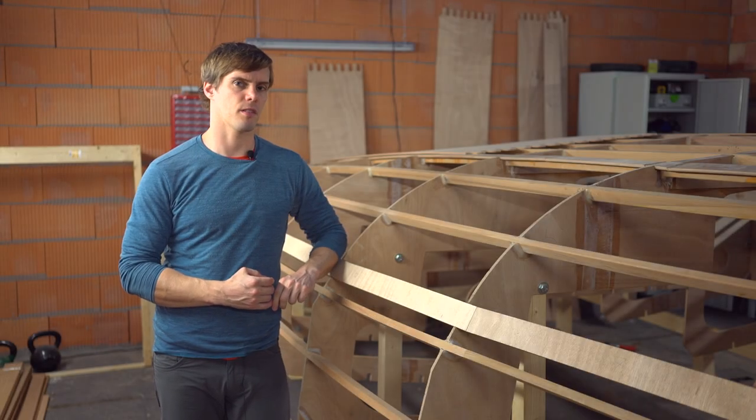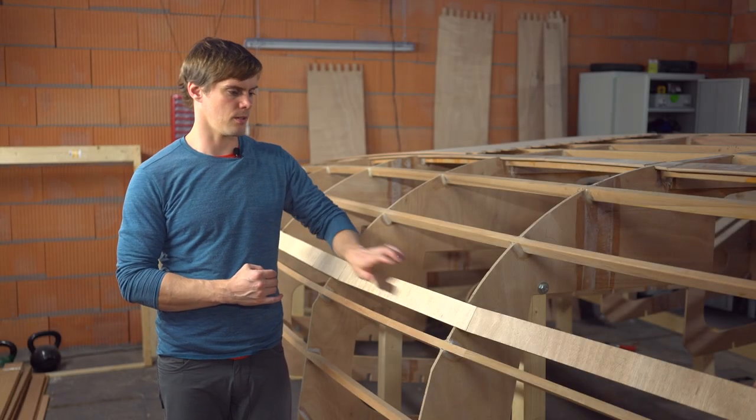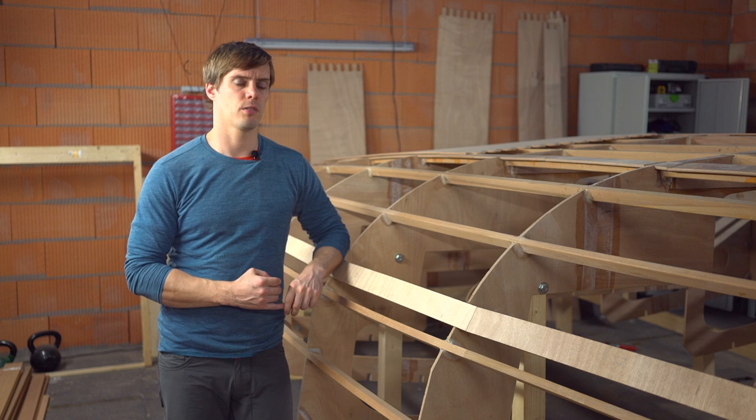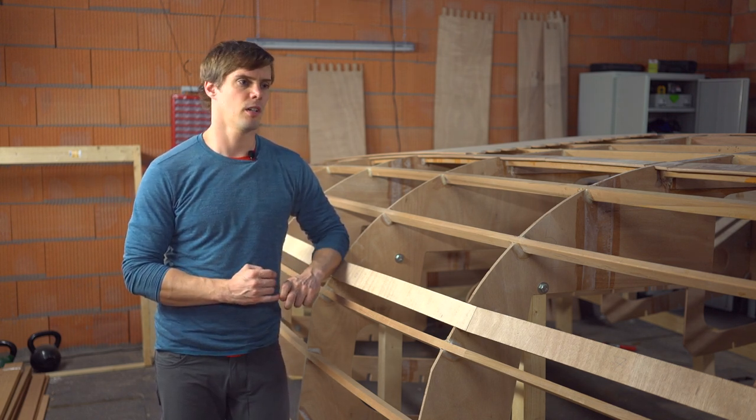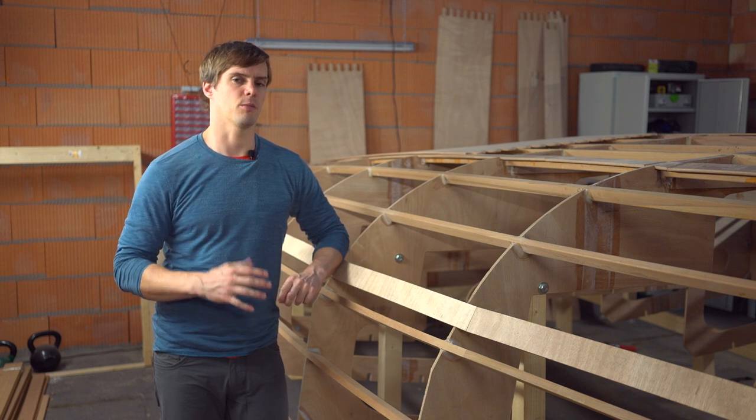There are two special sort of stringers called the tangents, which is this and this one. As you can see, they're covered with plywood, so the stringer below is a bit smaller than the other ones. And then there's six millimeter plywood on top.